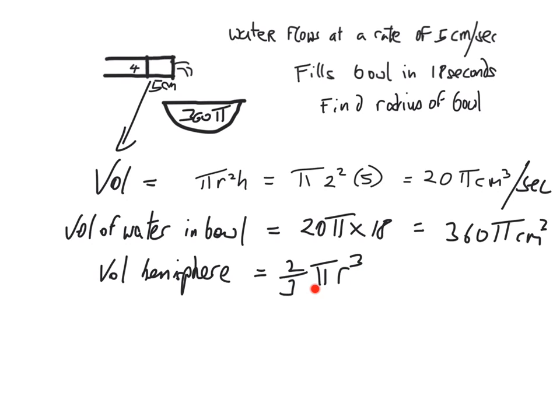But as we just said, that has to be equal to the actual volume of the water in the bowl, which is 360π. So we can make an equation out of that. We can say 2/3πr³ equals 360π.